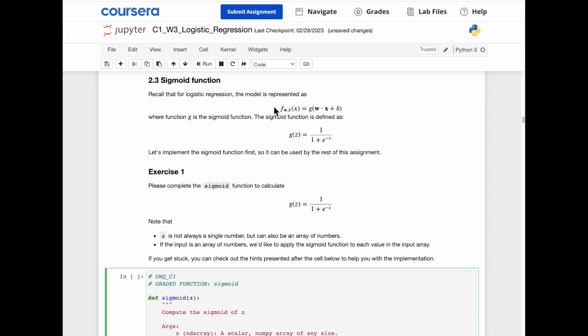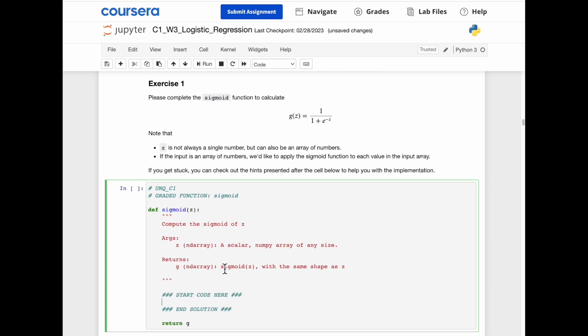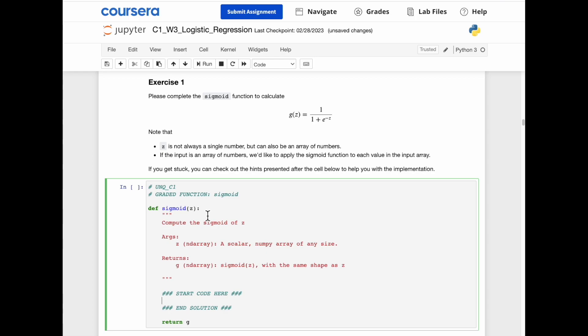Now we're going to go over the sigmoid function. Recall that for logistic regression, the model is represented by this. And g is the sigmoid function, defined by 1 over 1 plus e to the negative z. And our job is to calculate this. Now, z is not always a single number, but can also be an array of numbers, like in this example. In this exercise, we're supposed to calculate sigmoid of z, where z is a scalar numpy array of any size. So we need to apply the sigmoid function on each and every single element of z.